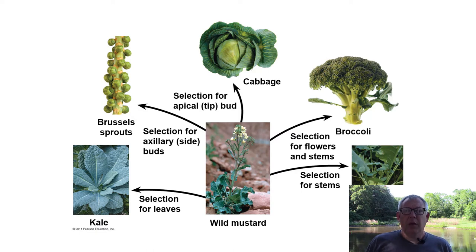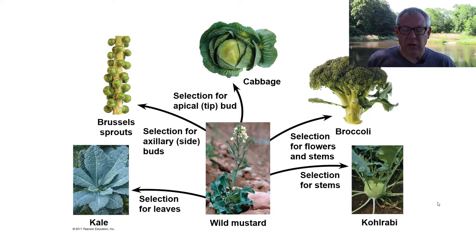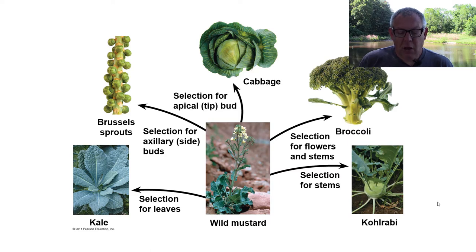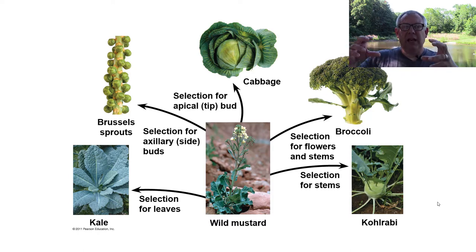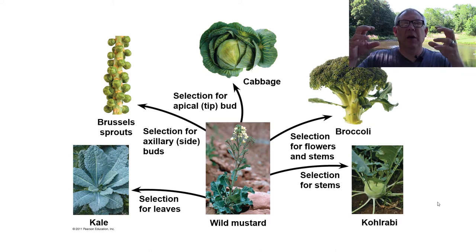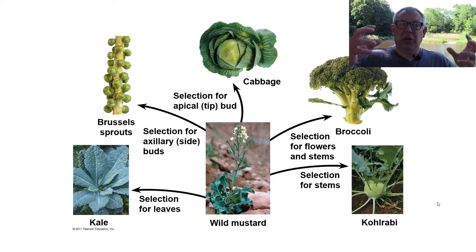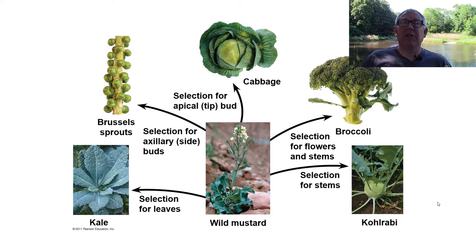For example, you're familiar with vegetables like kale, Brussels sprouts, cabbage, broccoli, and kohlrabi. Those are all very different vegetables, but they're actually all the same species — different forms of wild mustard. Just by breeding together individual plants that had the traits humans wanted, like a big flower, and keep picking the ones with the biggest flowers and artificially breeding those, you can end up with plants that produce broccoli.